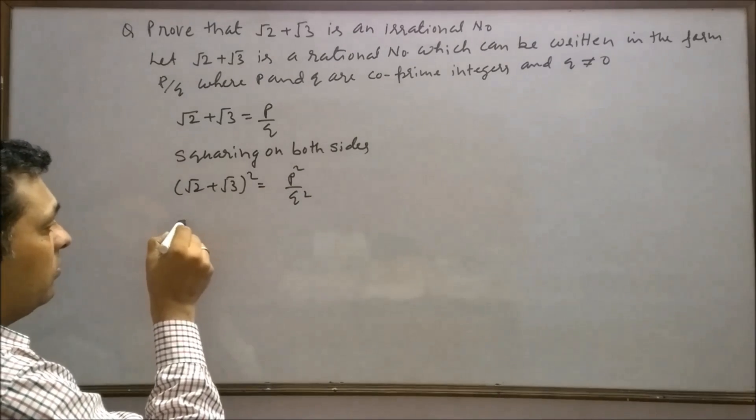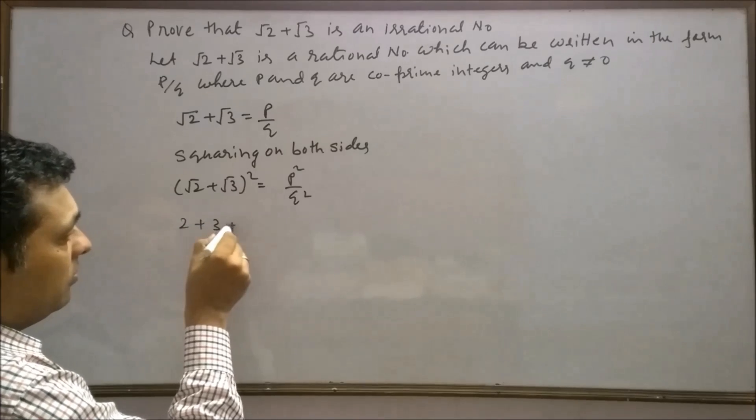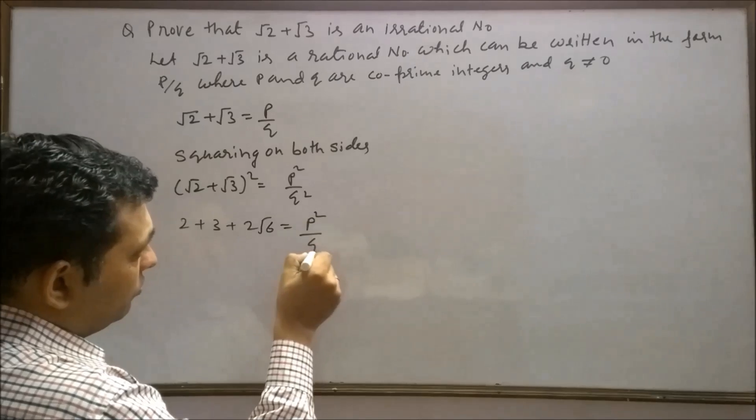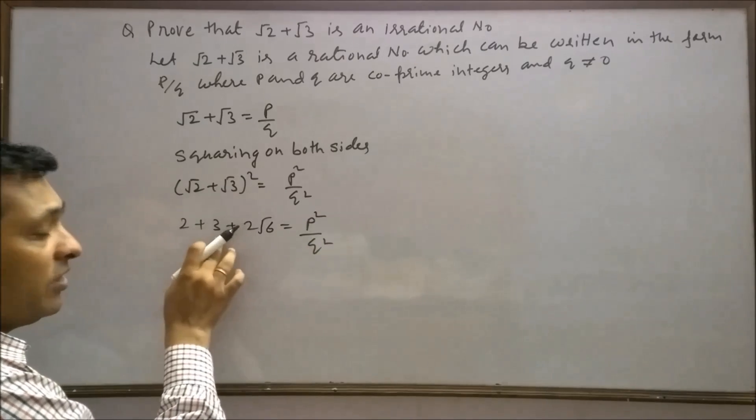Open this whole square: 2 plus 3 plus 2 root 6 equals p square upon q square. 2 plus 3 is 5.